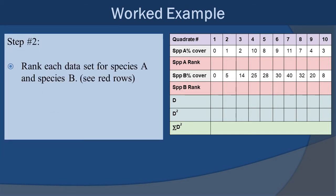Now we're going to rank each data set for Species A and Species B. So in the table to the right, you'll see I have the quadrats in purple on the top, then Species A cover 0, 1, 2, 10, 8, 9, 11, 7, 4, and 3. Now what I want to do is in that red shaded row, I am going to rank those. The same thing is going to happen with Species B cover, which is 0, 5, 14, 25, 28, 30, 40, 32, 20, and 8. In the red Species rank row below that, I'm going to rank them.